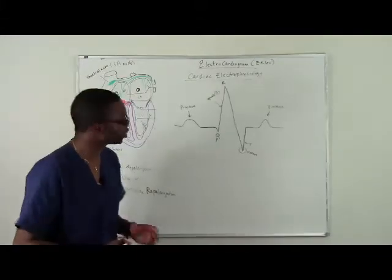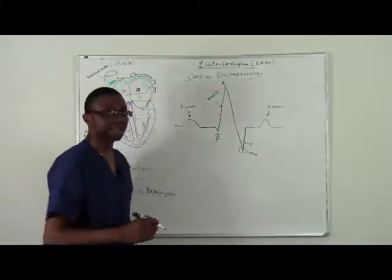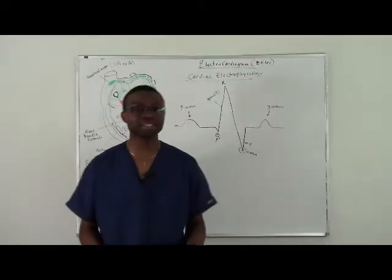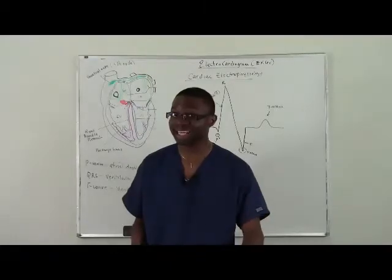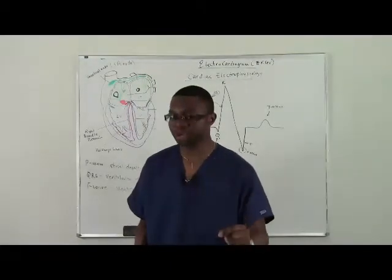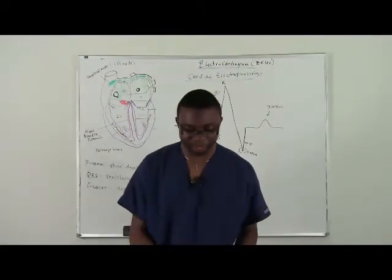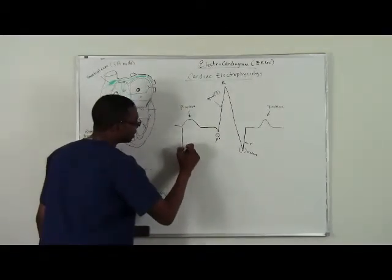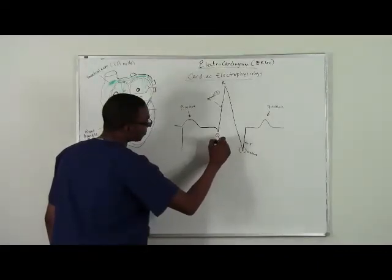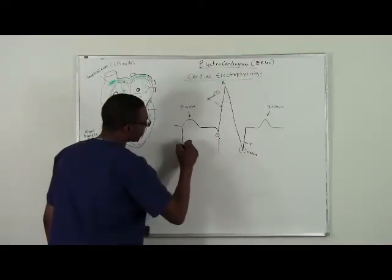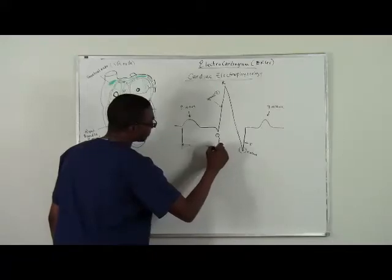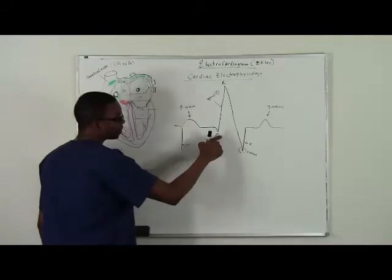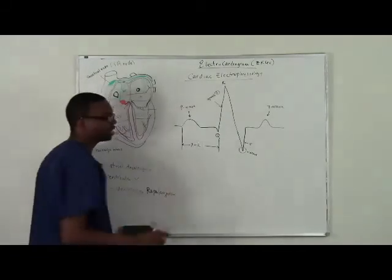The first interval that you're going to see on EKG is a PR interval. And the PR interval is the interval from the beginning of the P wave to the beginning of the Q wave. So where's the beginning of the P wave? Right here. That's the beginning of the P wave. Where's the beginning of the Q wave? Right there. So this interval between the beginning of the P wave and the beginning of the Q wave is known as the PR interval.